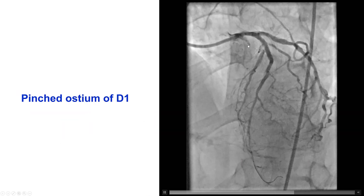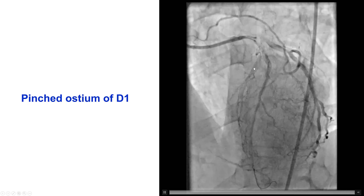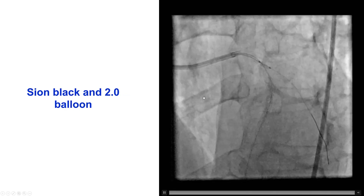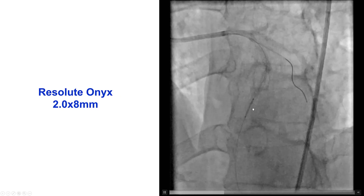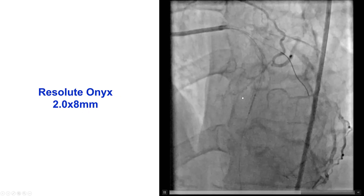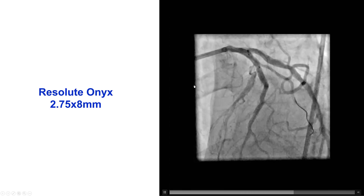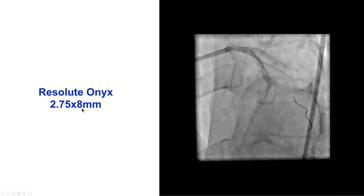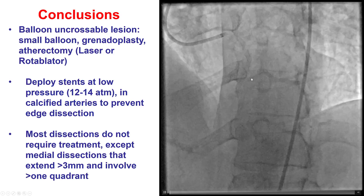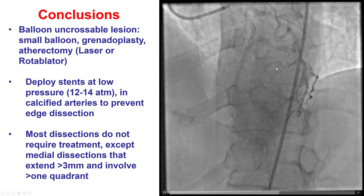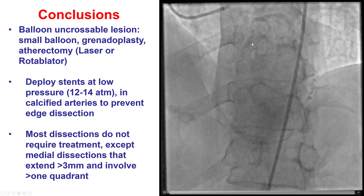We had pinched the origin of the diagonal branch, so we rewired the diagonal branch and performed balloon inflation there, followed by placement of a 2.0 mm stent distally, and then placement of another larger 2.75 by 8 mm stent more proximally, again jailing the diagonal branch. We did have good flow in this vessel.